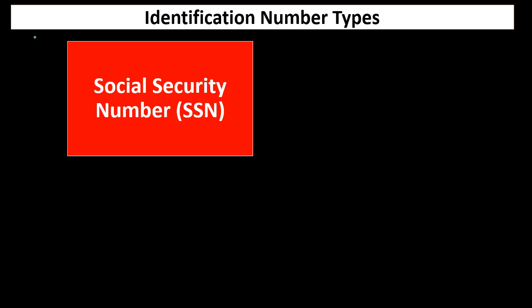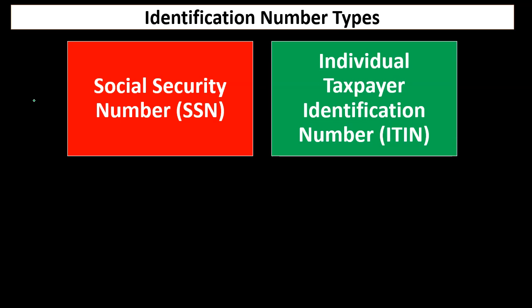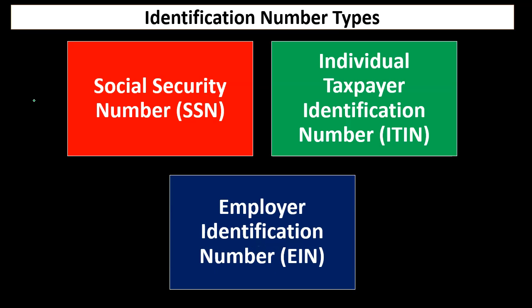We're now considering the identification number in relation to a sole proprietorship. There are three identification number types: the Social Security Number (SSN), the Individual Taxpayer Identification Number (ITIN), or the Employer Identification Number (EIN). These are basically the options you have for the sole proprietorship.